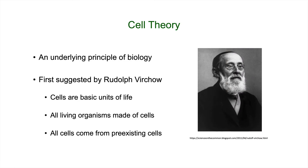As our understanding of cells developed, we developed something called cell theory over time. This was first suggested by German scientist Rudolf Virchow in the late 1800s. He said cells are the basic units of life, all living organisms are made of cells, and all cells come from preexisting cells. This is certainly true in the world we live in today — we are not aware of any living organisms not made of cells, and all cells we're aware of have come from preexisting cells. Maybe our definition of life isn't complete, but in the meantime, this is cell theory.